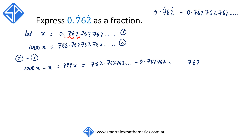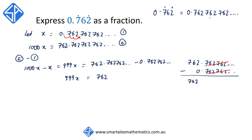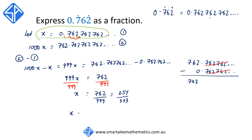Setting this up as a column subtraction, we can see that all the digits after the decimal point line up exactly, and when this happens they cancel out, giving us 999x is equal to 762. Dividing both sides by 999 and simplifying by dividing top and bottom by 3, this gives us 254 over 333. Since we defined x as being equal to this recurring decimal, we can conclude that 0.762 repeater can be written as 254 over 333 as a fraction.